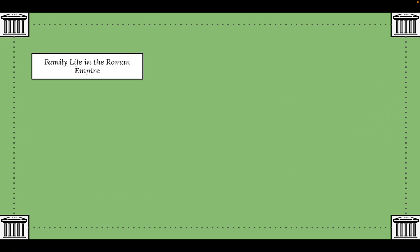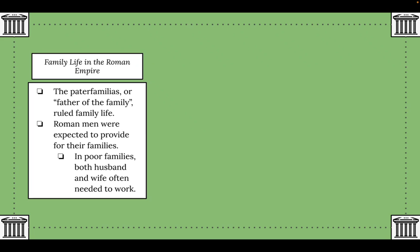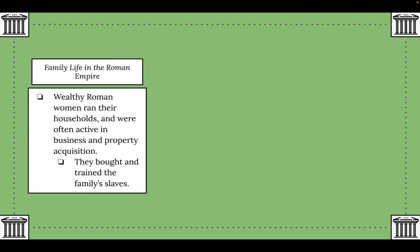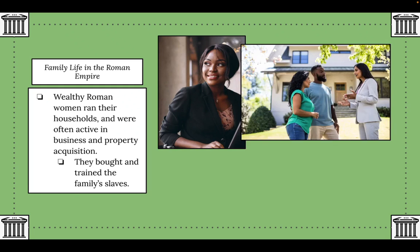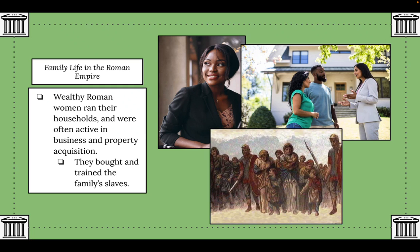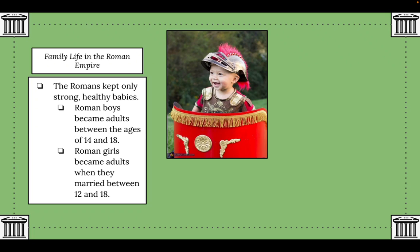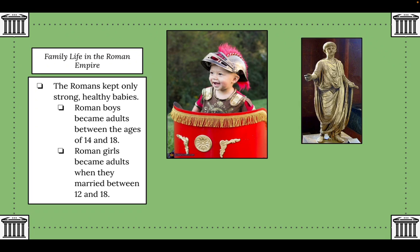In family life, the term 'paterfamilias' means 'father of the family,' and he ruled family life. Roman men were expected to provide for their families, with the exception of poor families where both husband and wife worked to make ends meet. Wealthy Roman women ran their households and were often active in business, property acquisition, and buying and training family slaves. Romans kept only strong, healthy babies. Roman boys became adults between ages 14 and 18, and Roman girls became adults when they married, between ages 12 and 18.